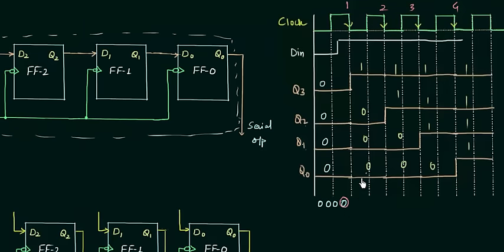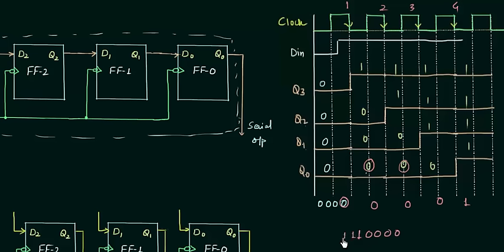Q0 is 0 for the first few clock pulses, and finally our LSB is detected and Q0 becomes 1. So the data coming out is 0, 0, 0, 0 — that is the LSB — then 1, 1, and finally the MSB. So we have our data as 1, 1, 1, 1 output from Q0. Definitely we require more than 4 clock pulses to have our data out from the shift register.